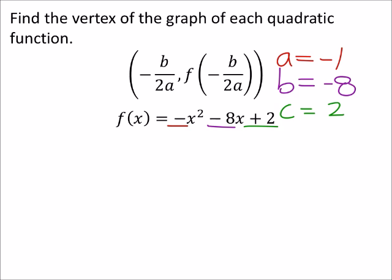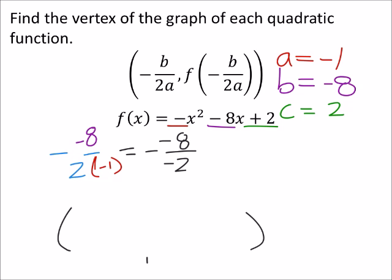So in my ordered pair, I can find the x value by taking negative b over 2a. But I know my b value is negative 8, and I know my a value, yes, thank you, a is a negative 1. And we're just going to solve this expression, fraction, whatever you want to call it. And we got a negative, negative 8 over 2 times negative 1 is negative 2. And that becomes negative 8 divided by negative 2 is a positive 4. So the x value on this is a negative 4.